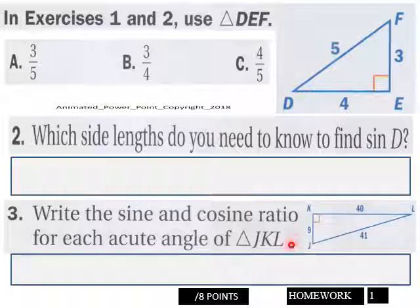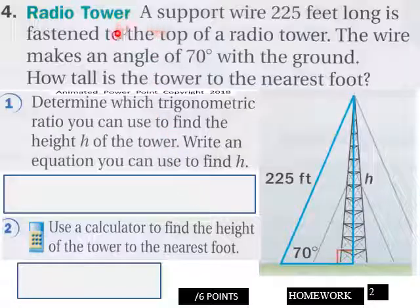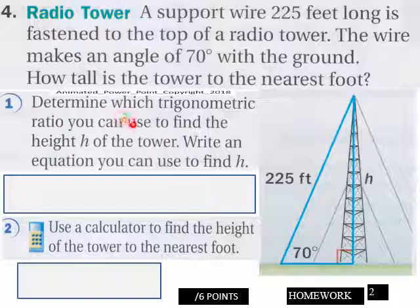Page two, you got a word problem here. Determine which trigonometric ratio you can use to find the height h of the tower here. Find your height here, write an equation you can use to find h, and then using a calculator, find the height of the tower to the nearest foot. So first write an equation here to define height, and then actually calculate the height using a calculator and put your answer there. You got six points here, page two.